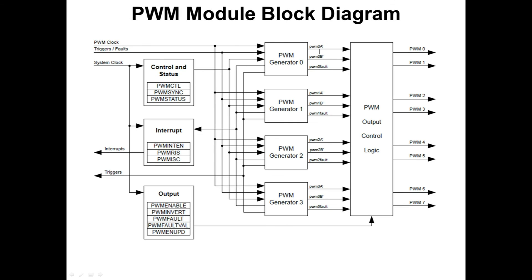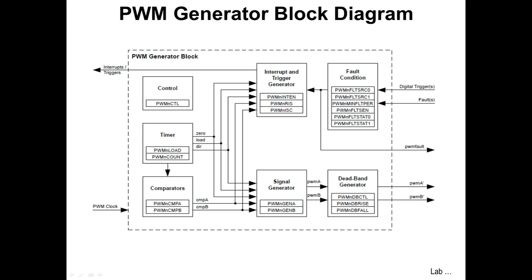Remember that there are two PWM modules per device. Note the control and status, interrupt, and output control registers shown on the left. All four PWM generators go through the output control block before reaching the pins. Each PWM module contains four generators, for a total of eight per device. Note the control, timer, and comparator control registers on the left. For our lab, we'll be primarily interested in the control, load, and count registers shown.